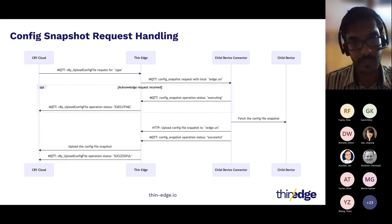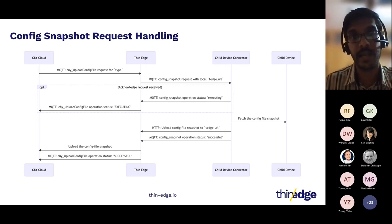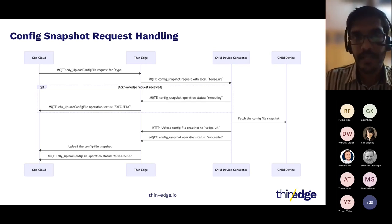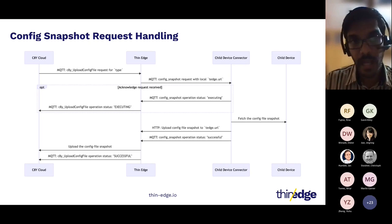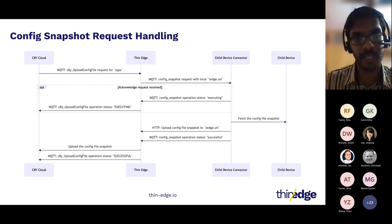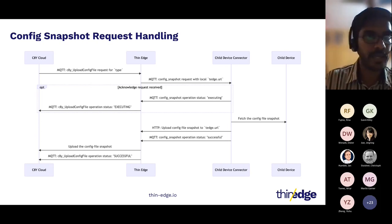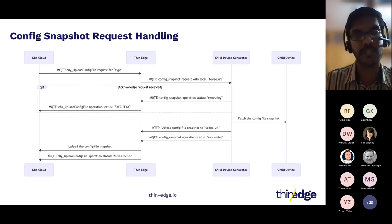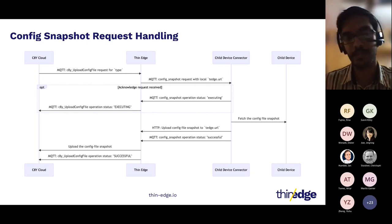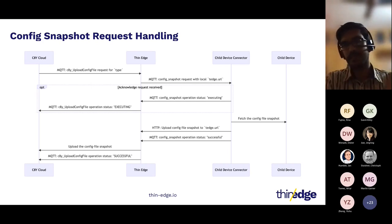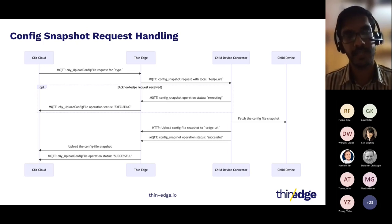The configuration snapshot flow is fairly similar — the request comes from the cloud with optional acknowledgements sent back to Thinage. The difference is that the connector fetches the configuration snapshot from the child device over its third-party protocol, uploads the configuration file to the TEDGE URL received in the request, and marks the operation successful by sending an MQTT message. Thinage then uploads that file to Cumulosity and marks the operation successful there as well.